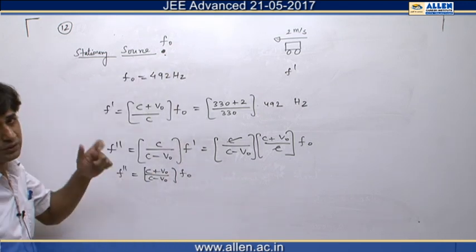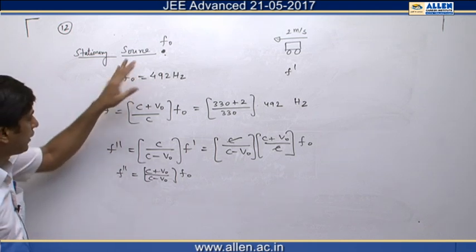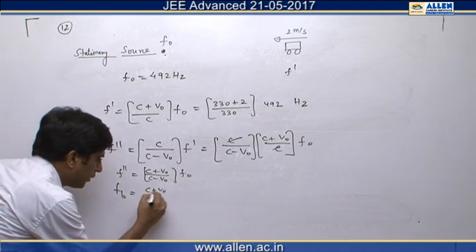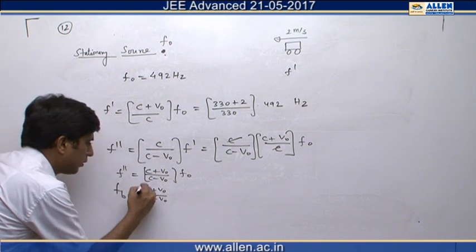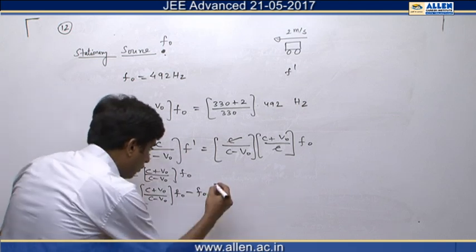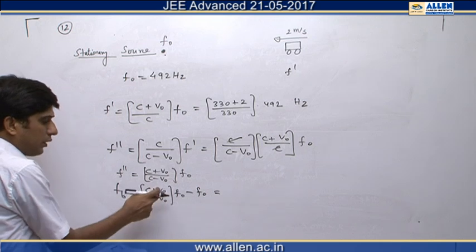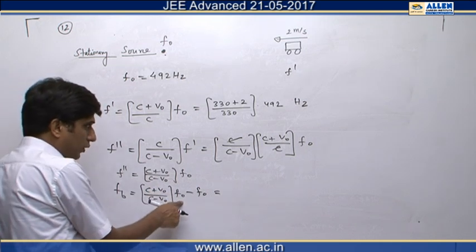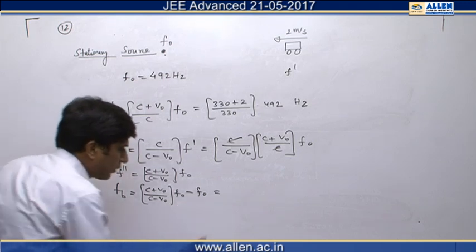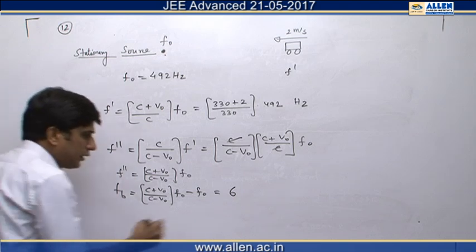To get the beat frequency, we have to find the difference between f'' and f₀. Therefore, beat frequency is given by [(c + v₀)/(c - v₀) times f₀] minus f₀. If we put the value of c as 330, v₀ as 2, and f₀ as 492, we get the value of beat frequency as 6. Therefore, the correct answer is 6.